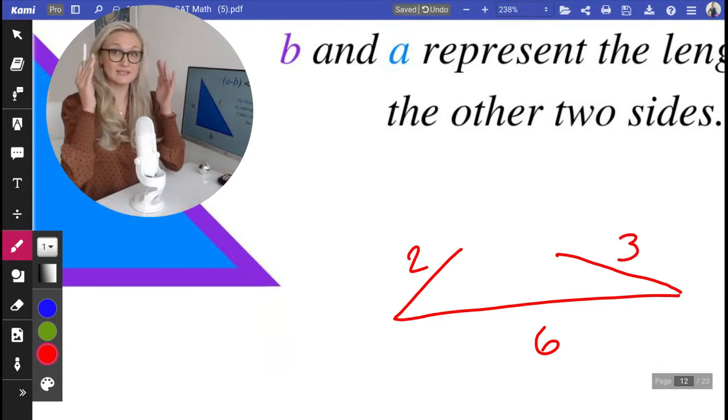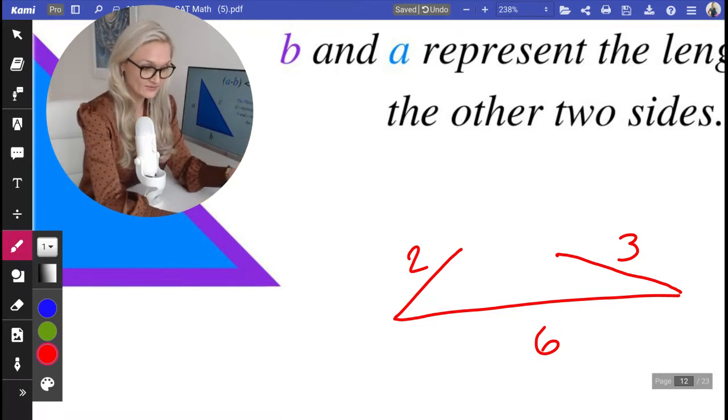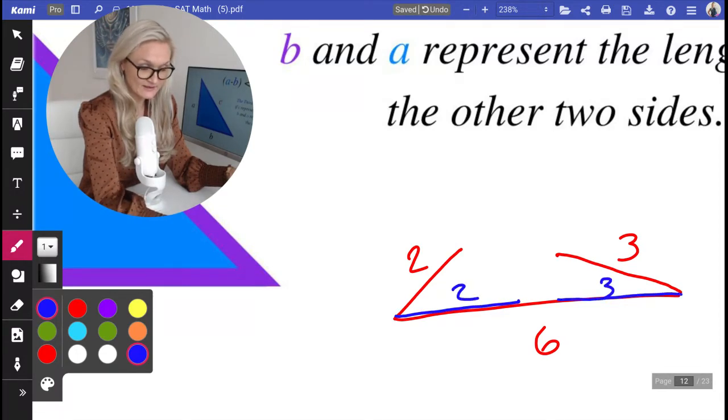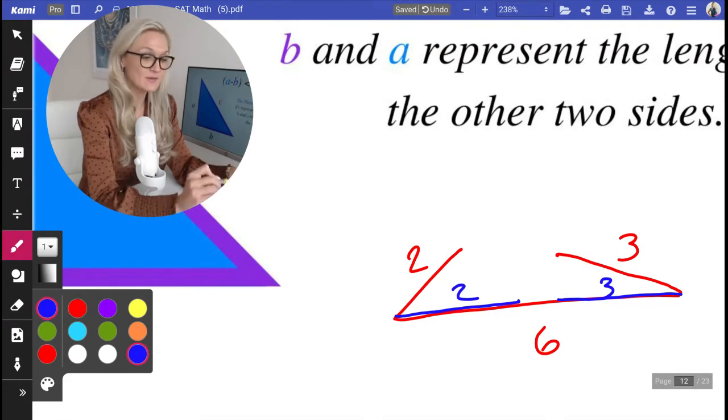Do you see how two and three, they want to meet but they can't meet? Because even if the angle was really minimal, even if these two sides lay flat, this was two and this would be three. If this side is six, it can't work.